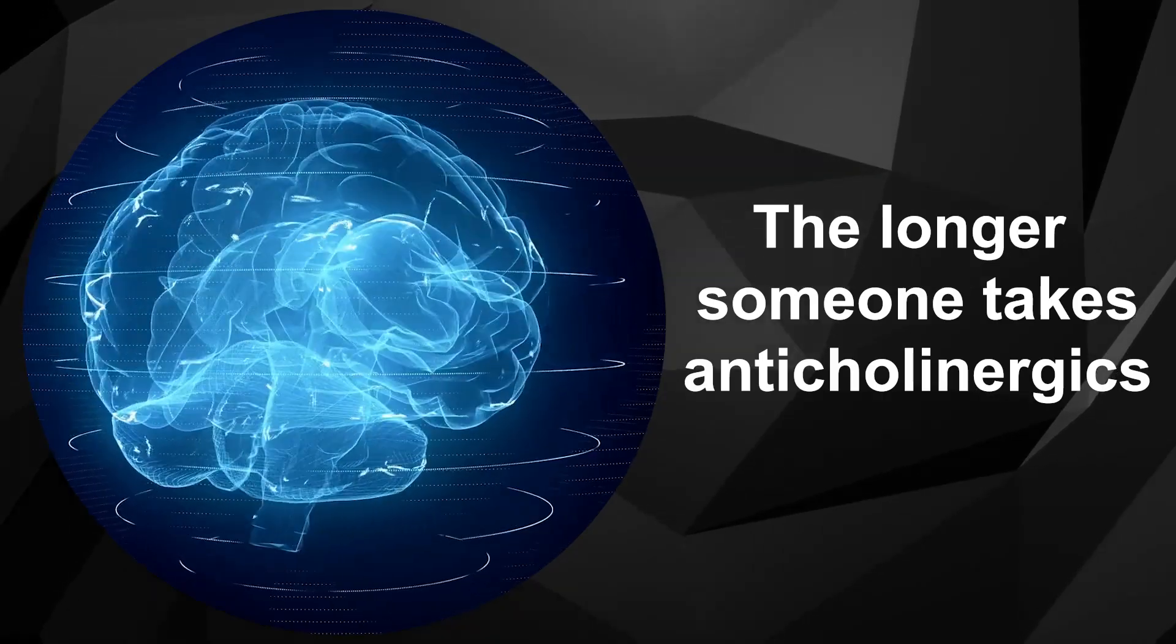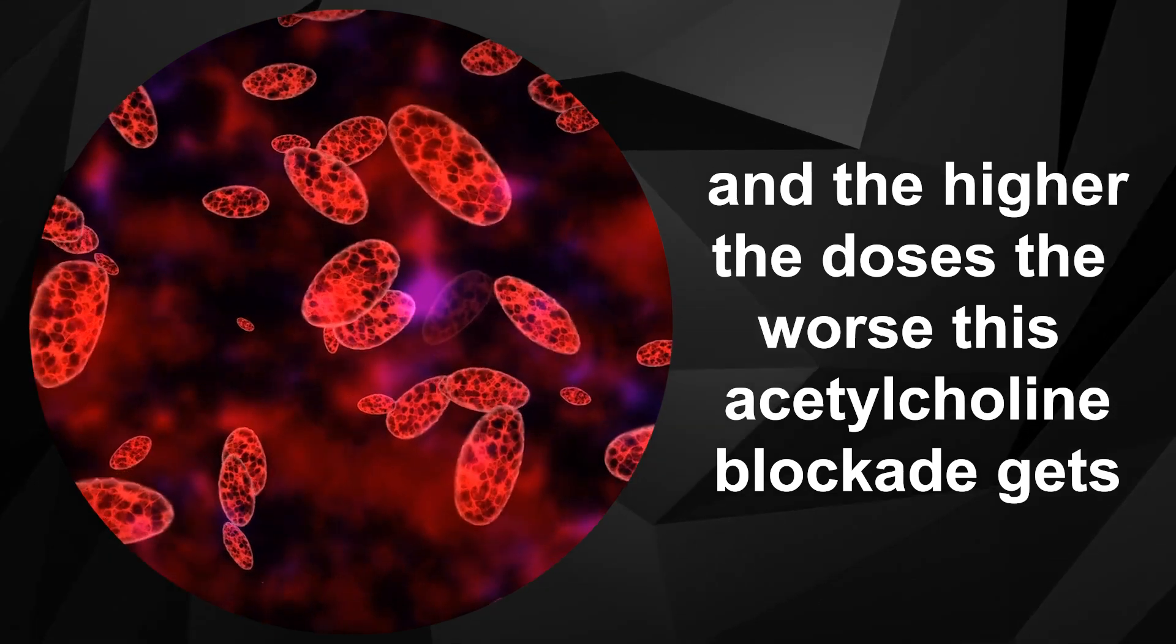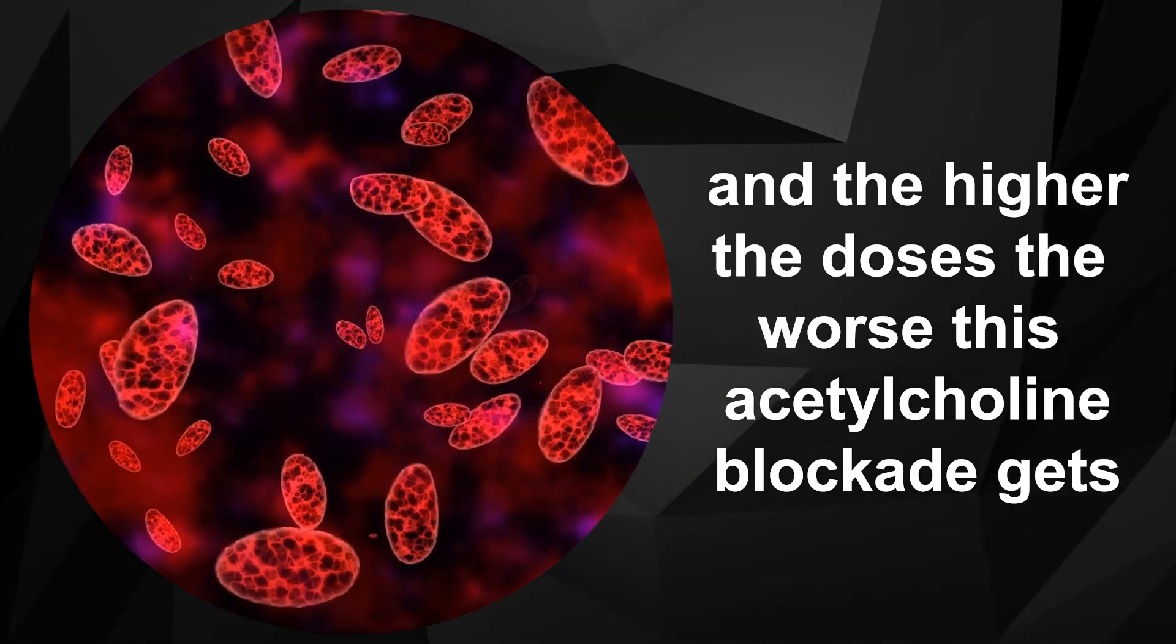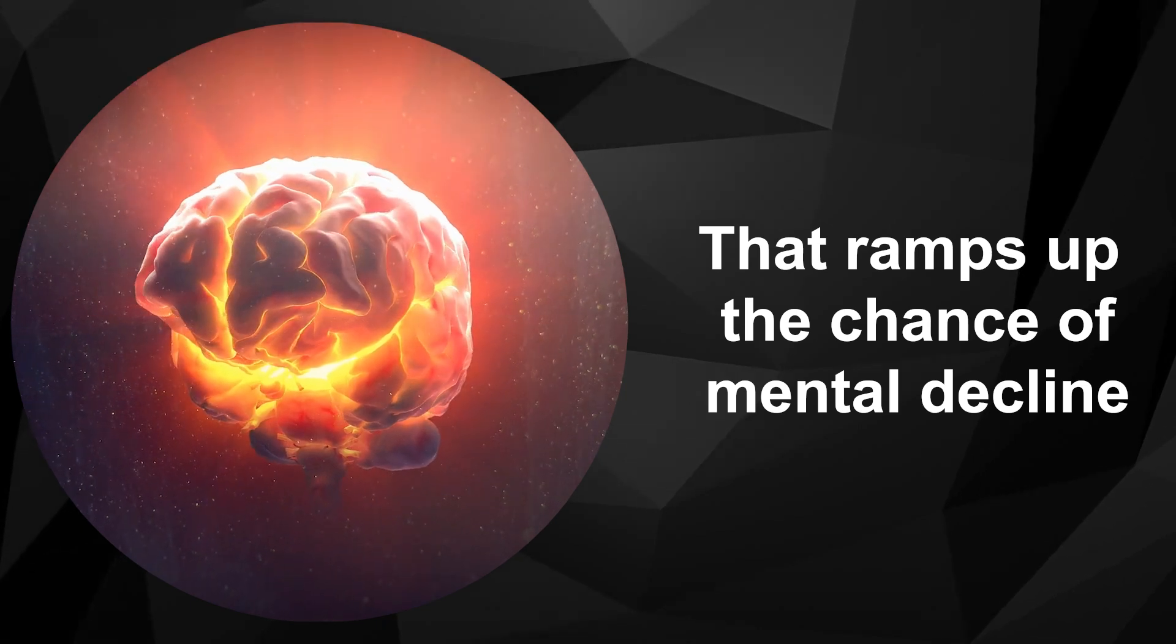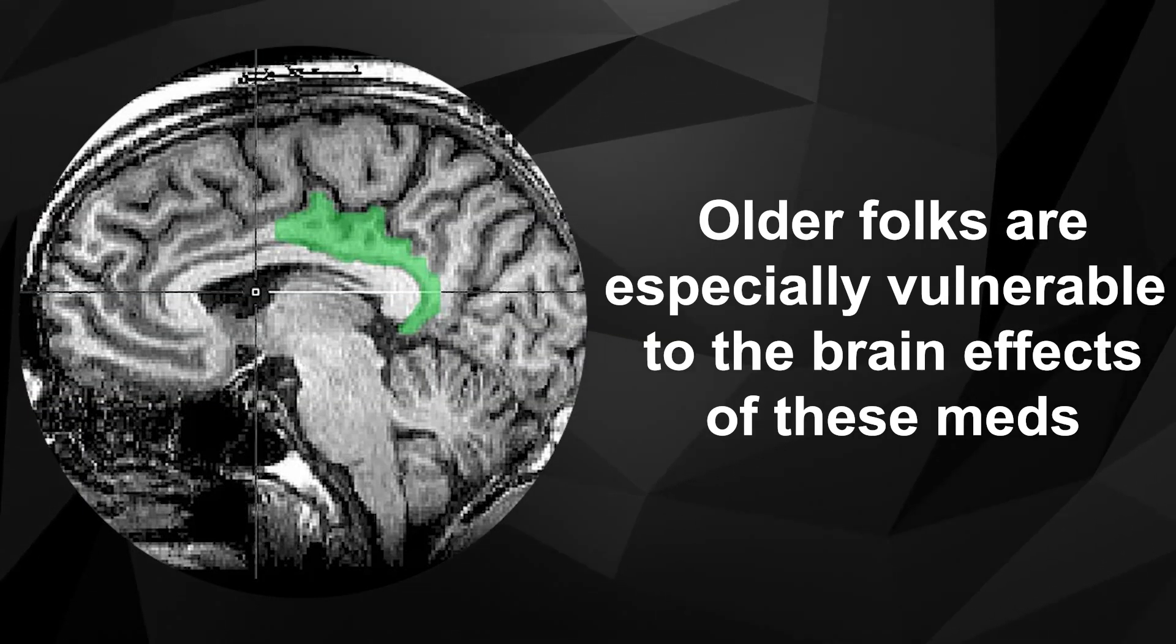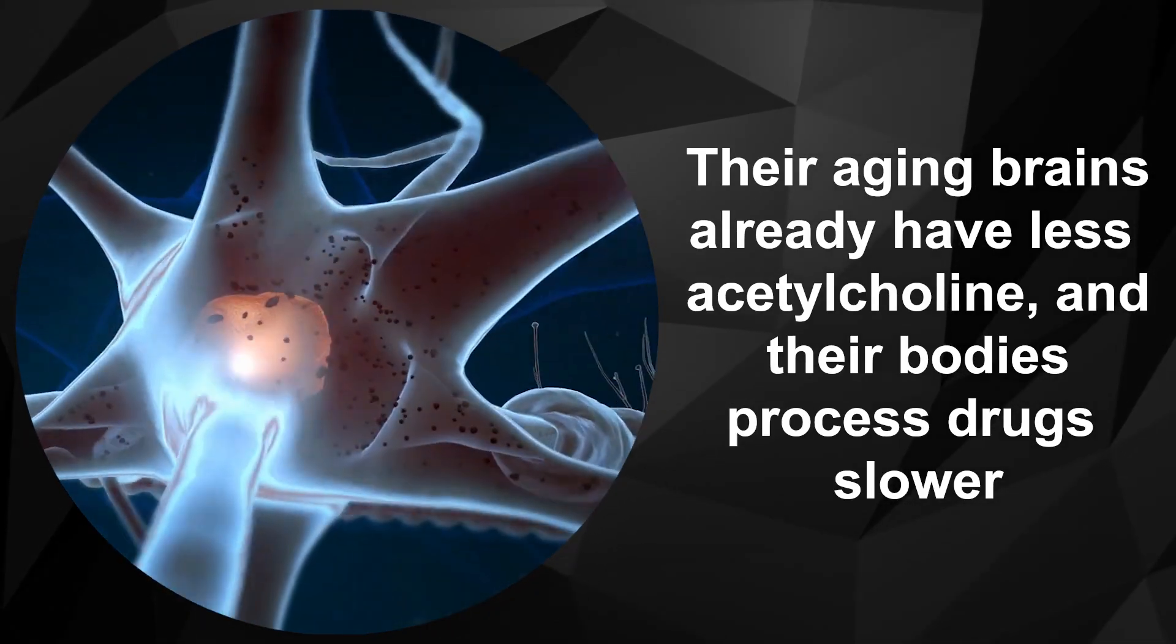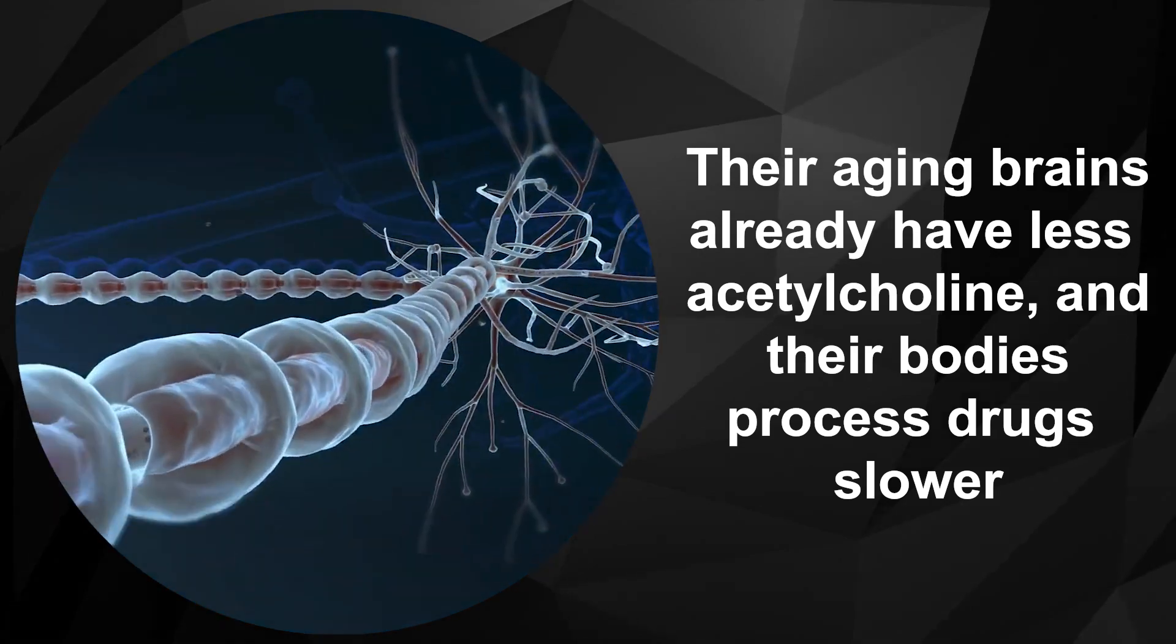The longer someone takes anticholinergics and the higher the doses, the worse this acetylcholine blockade gets. That ramps up the chance of mental decline. Older folks are especially vulnerable to the brain effects of these meds. Their aging brains already have less acetylcholine, and their bodies process drugs slower.